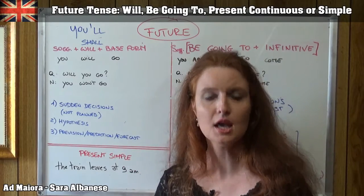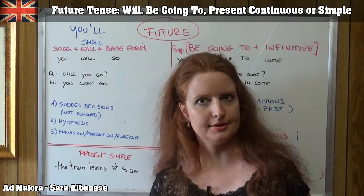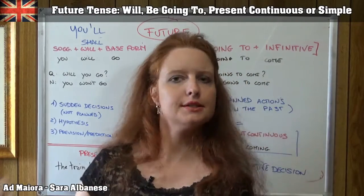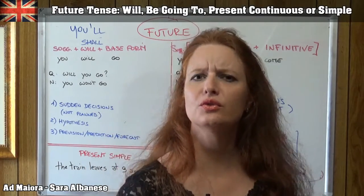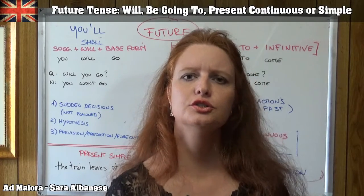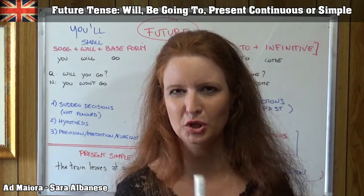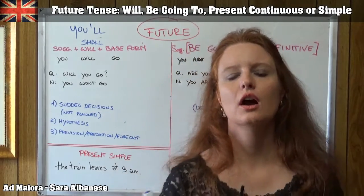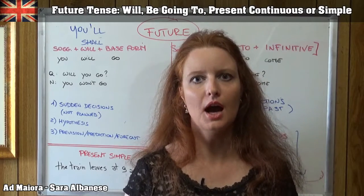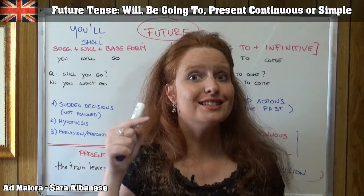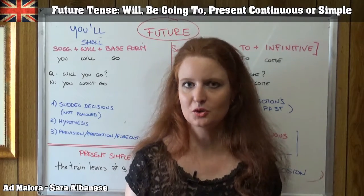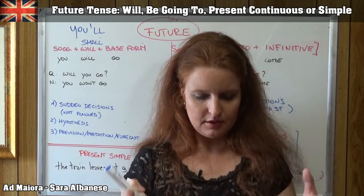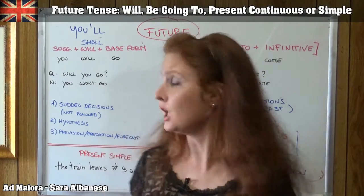We use 'will' in three main situations. First, for sudden decisions — decisions that aren't planned, made at the very moment of speaking. For example, a friend tells me he's going to have a party tonight and asks if I'd like to come. I answer: 'I will come' — I decide right now, I didn't know about the party before, he's just told me. So this decision is made at the moment of speaking — that's a sudden decision.